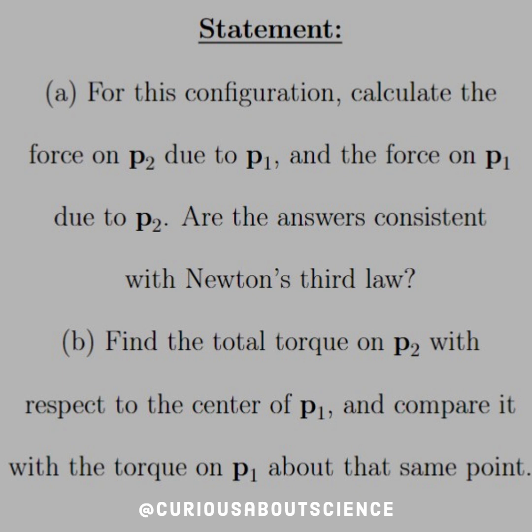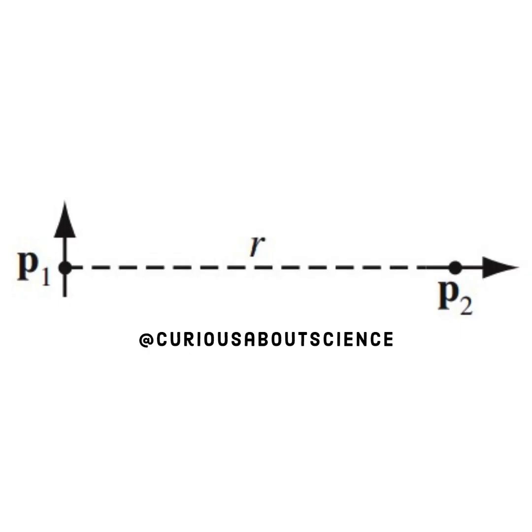Part b: Find the total torque on P2 with respect to the center of P1 and compare it to the torque on P1 about the same point. So a quick review of the diagram: we have P1 that points up and P2 that points to the right. Notice that they're at a 90 degree angle and that'll come into play later.